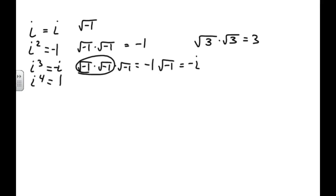i to the 4 is i squared times i squared. And i squared is negative 1. So negative 1 times negative 1 is 1. Now, don't worry. You don't have to memorize this because your handy-dandy calculator will tell you this.